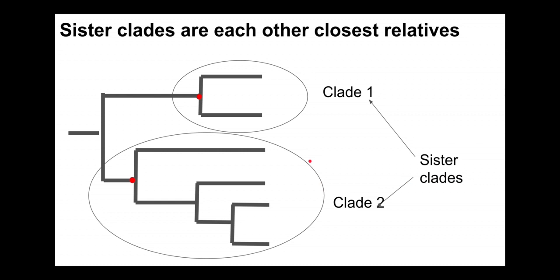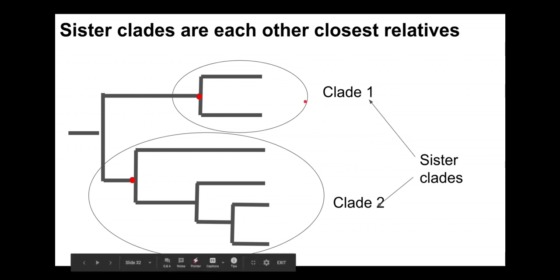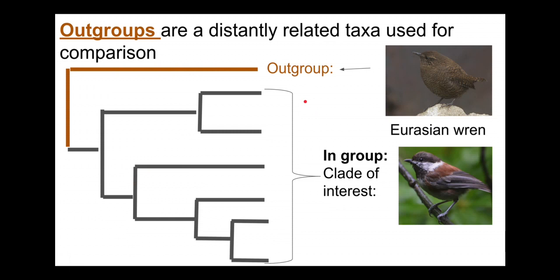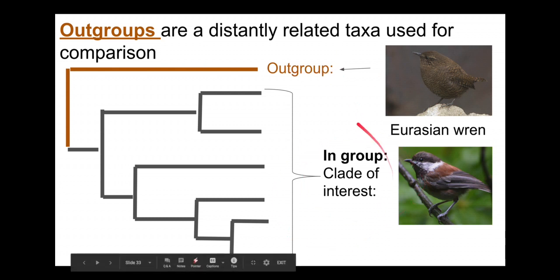Just like you can have sister species, you can have sister clades. This clade here is the sister clade of this clade here — we can refer to them as sister clades. Many trees have outgroups on them. Outgroups are more distantly related species used for comparison. Here I've added a Eurasian wren as an outgroup — it's a small woodland species, but has a very different beak, legs, wings, and lifestyle, and is quite distantly related genetically. The ingroup is the clade of interest — all the species descended from a common ancestor that we are studying.